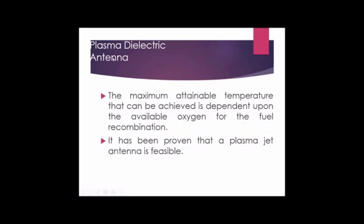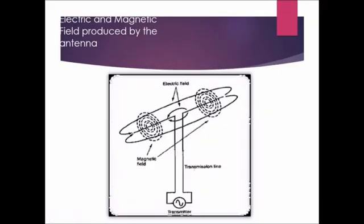This is the electric and magnetic field produced by the antenna. Here you have a transmitter and the transmission lines. This is the magnetic field and this is the electric field — this is how the electric and magnetic fields are produced by an antenna.